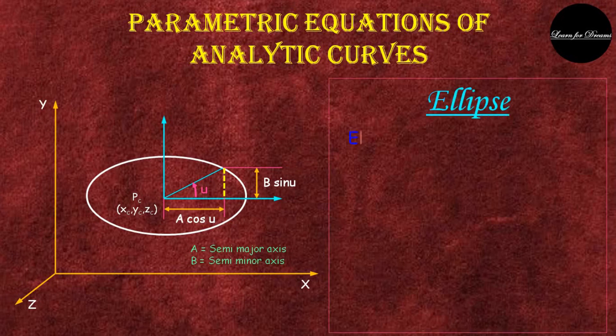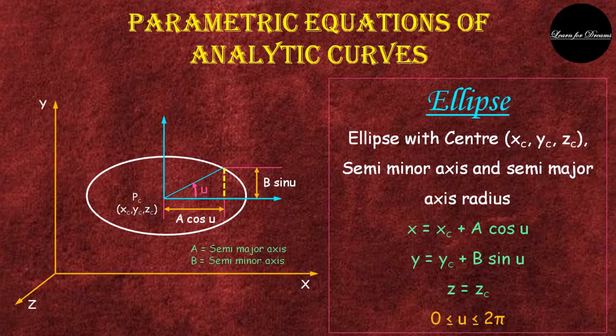Next is ellipse. For circle, radius is constant in both x and y directions, but for ellipse there is a semi-major axis and semi-minor axis. Instead of radius r, we have a and b. That is, x is equal to xc plus a cos u, y is equal to yc plus b sin u, and z is equal to zc.